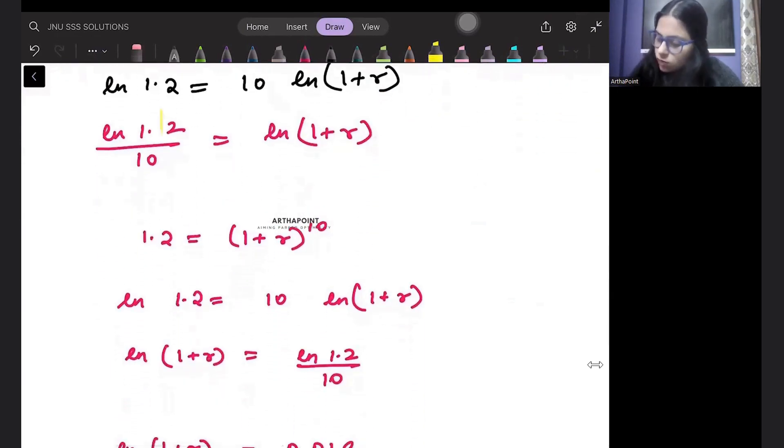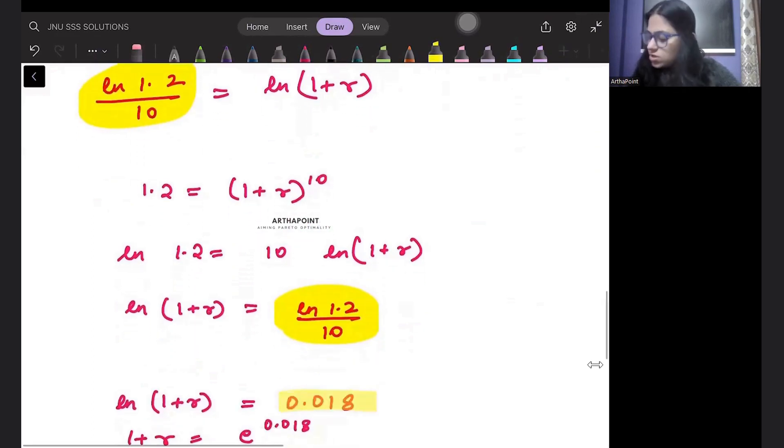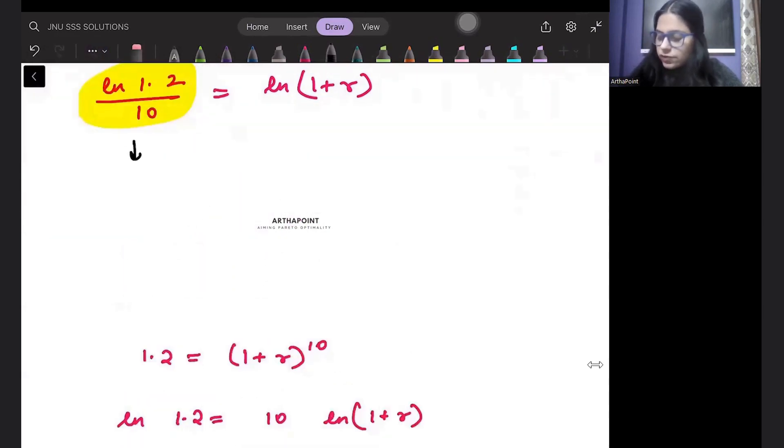When you will solve this side, when you solve this in calculator, you will get the answer as 0.018. This will be ln 1 plus R.